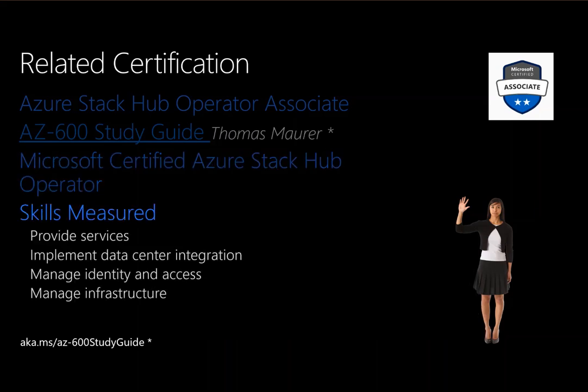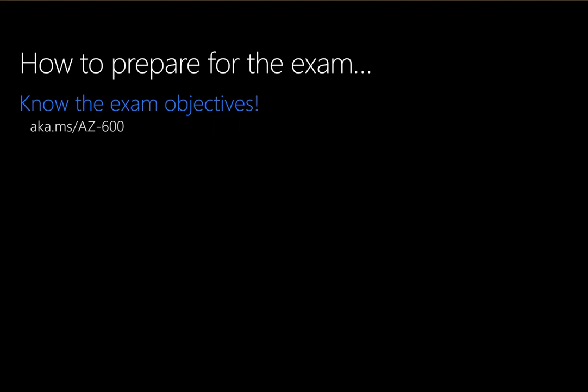The skills measured on this exam will frame out the four modules we will review: provide services, implement data center integration, manage identity and access, and manage infrastructure. The exam objectives will tell you categorically what will be on the AZ-600. If you didn't review these, you really can't be ready — unless you have simply been there day-to-day operating an Azure Stack Hub. By reviewing the exam objectives, you can quickly determine familiar topics versus foreign ones. For foreign topics, you will need to study the docs or get hands on an Azure Stack Integrated System or an Azure Stack Development Kit.